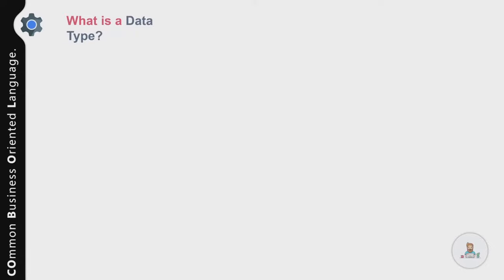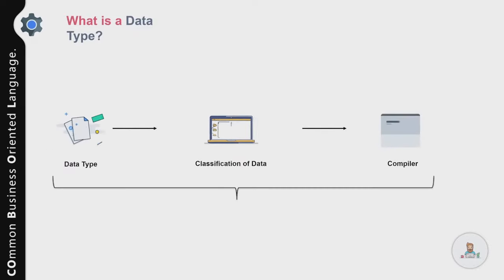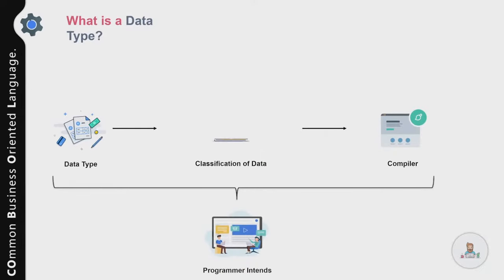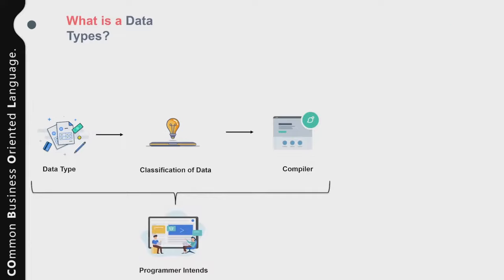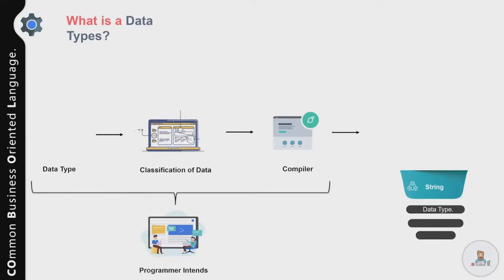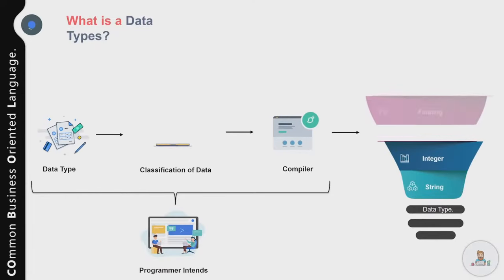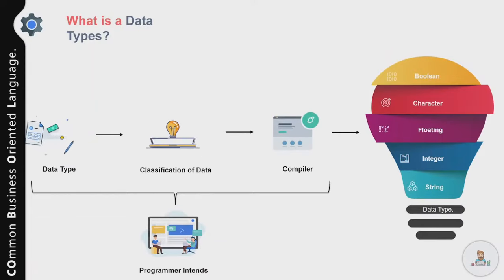Now let's talk about data types in COBOL. A data type is a classification of data which tells the compiler how the programmer intends to use the data. Understanding data types ensures data is collected and stored in a preferred format. Most programming languages support various types of data including integer, character, string, floating point, and boolean.